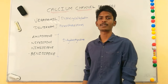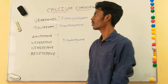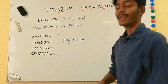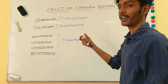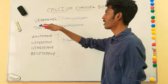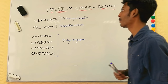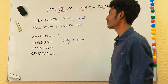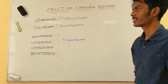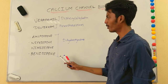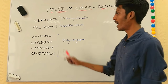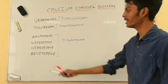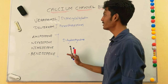Today we'll discuss calcium channel blockers. They are classified into three groups based on their compounds. We have verapamil, derived from diphenylalkylamine; diltiazem, derived from benzothiazepines; and a group called dihydropyridines, which include amlodipine, nifedipine, nimodipine, and barnidipine — everything ending with '-dipine'.